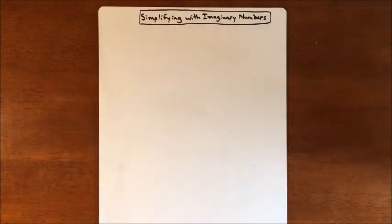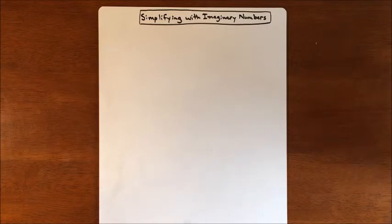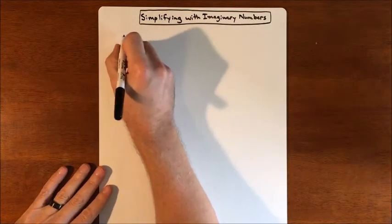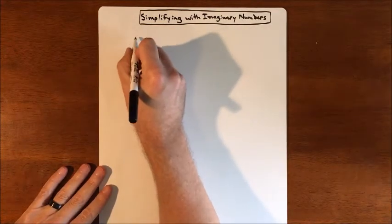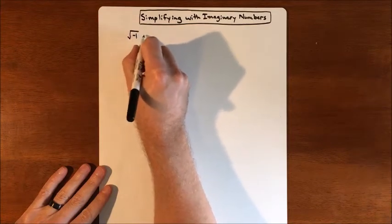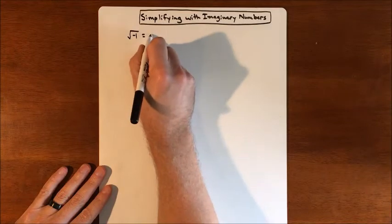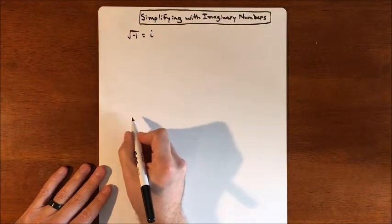In this video, we're going to be working with and simplifying imaginary numbers — adding, subtracting, multiplying, dividing, and simplifying in general. Quick review: the whole idea of an imaginary number is the square root of a negative. We symbolize that with an i.